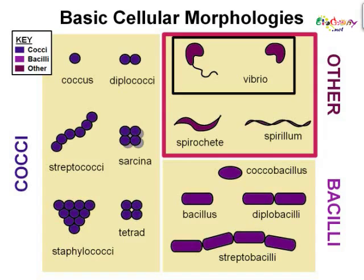Most bacterial species are either spherical, rod-shaped, or a version of the two. This is shown in Section 3, classified here as other. Some rod-shaped bacteria, called vibrio, are slightly curved or comma-shaped. Others can be spiral-shaped, called spirilla, or tightly coiled, called spirochetes. A small number of species even have tetrahedral or cuboidal shapes. More recently, bacteria were discovered deep under the Earth's crust that grow as long rods with a star-shaped cross-section. The large surface area-to-volume ratio of this morphology may give these bacteria an advantage in nutrient-poor environments. This wide variety of shapes is determined by the bacterial cell wall and cytoskeleton, and is important because it can influence the ability of bacteria to acquire nutrients, attach to surfaces, swim through liquids, and escape predators.